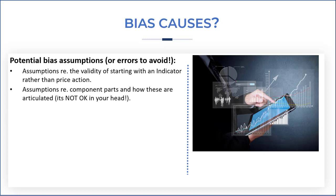We can make assumptions about component parts. We may have a favourite indicator that we use all the time, so we've got to be careful that these component parts of our plan are transferable across different strategies and systems. We also need to make sure these are articulated and written down in a way that's specific and unambiguous — it's not okay when it's only in your head.